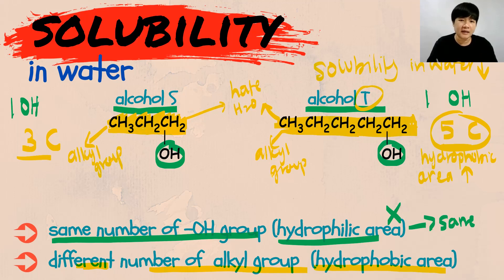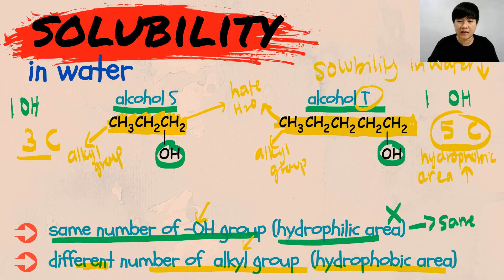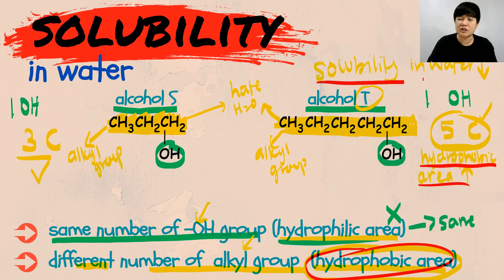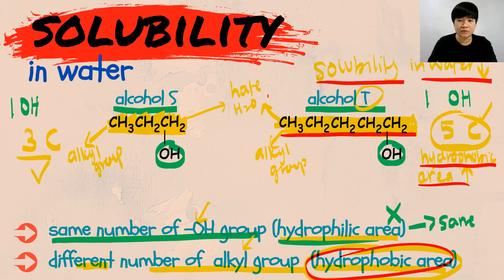That is how we assess the hydrophobic and hydrophilic areas — draw your alcohol and compare the number of OH groups and the number of alkyl groups. We cannot discuss the hydrophilic area here because they are the same, but we can discuss the hydrophobic area because the number of carbons is different: 3 carbon versus 5 carbon. The bigger the hydrophobic area, the lower the solubility of alcohol in water — it's the opposite of hydrophilic, because that area doesn't like water.